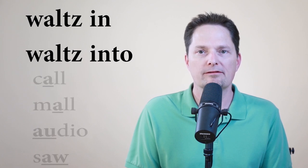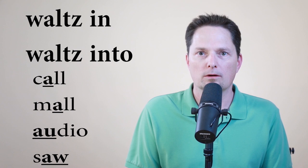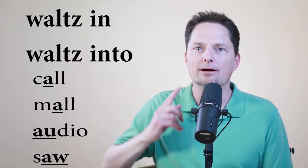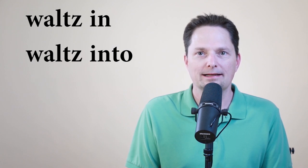Let's look at pronunciation. Waltz. The vowel is the sound aw. We see the sound in words like call and mall, audio, and saw. The sound is in the back, back here. Aw. Waltz. You see the letter Z, but we don't pronounce the zebra sound. We use the true S sound. So the T and the S together make the sound tss. Waltz.